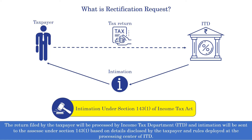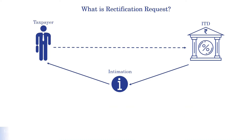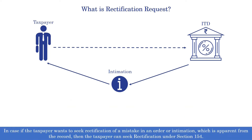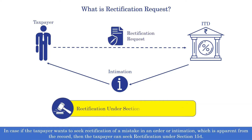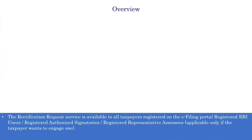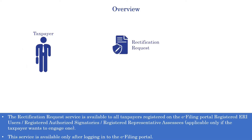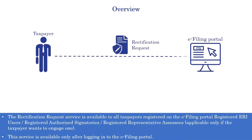In case the taxpayer wants to seek rectification of any mistake in the intimation received under Section 143(1), the taxpayer can file a rectification under Section 154. Please note that the rectification can only be filed for an error which is apparent from the record. The rectification request service is available to all taxpayers registered on the e-filing portal.